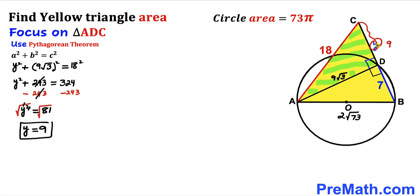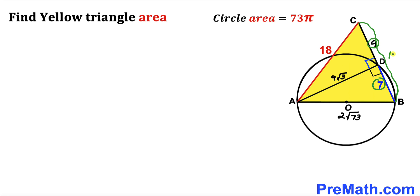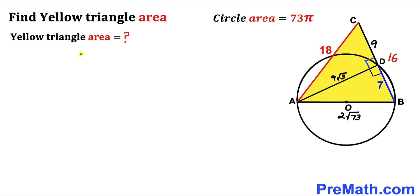We can observe that CD = 9 units and chord BD = 7 units, so the full secant BC = BD + DC = 7 + 9 = 16 units.